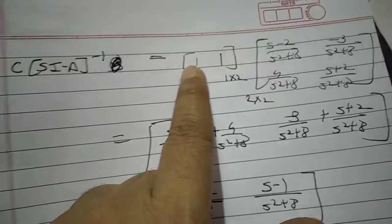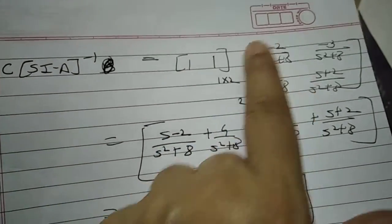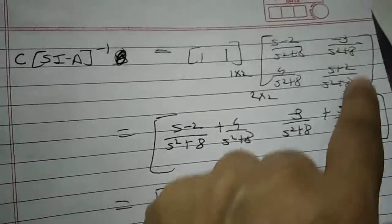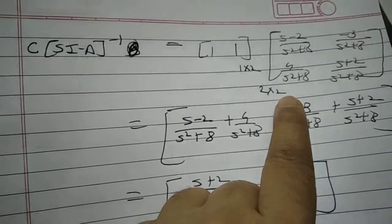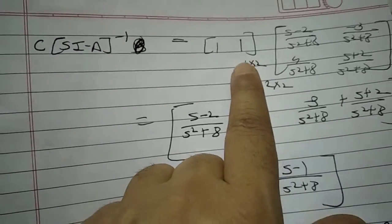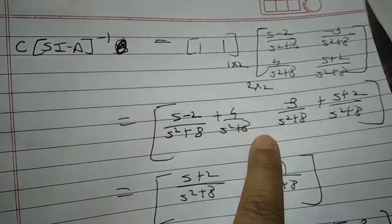SI minus A inverse dimension is 2 by 2. So how are you going to multiply? This multiplied by this. First you have to find the dimensions of the output matrix. Dimension of output matrix is 1 by 2. That means you will get 1 row and 2 columns.